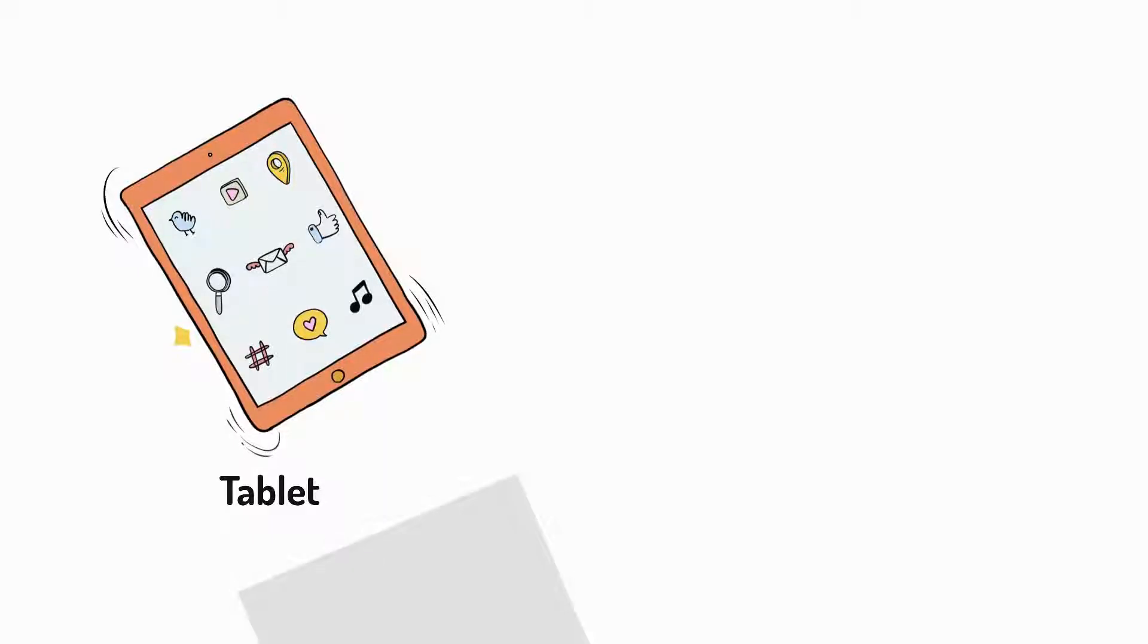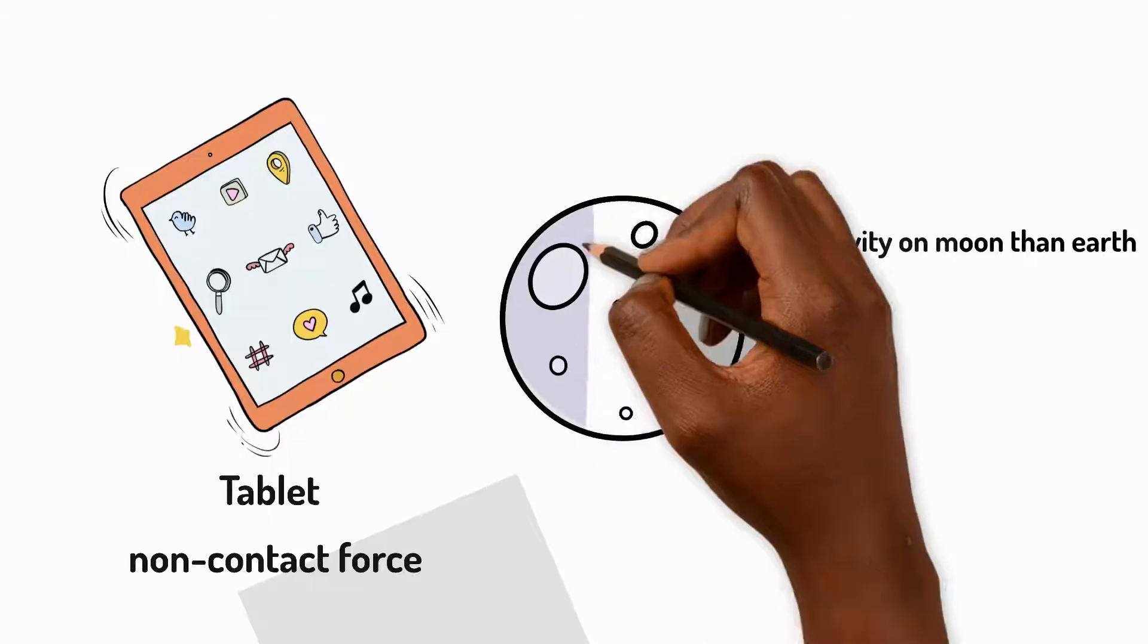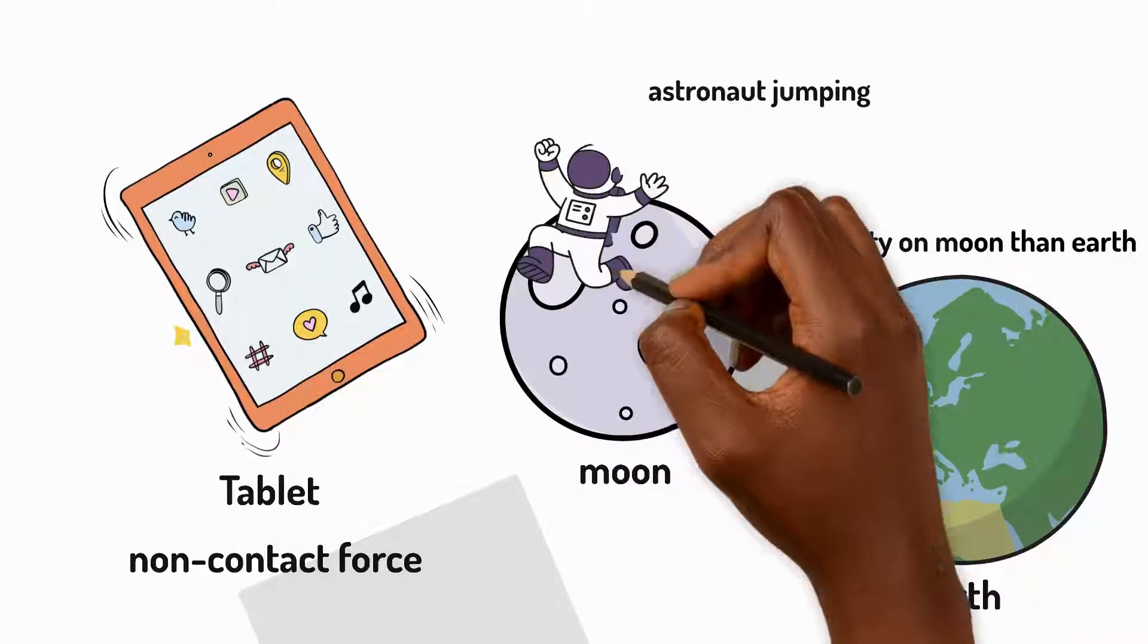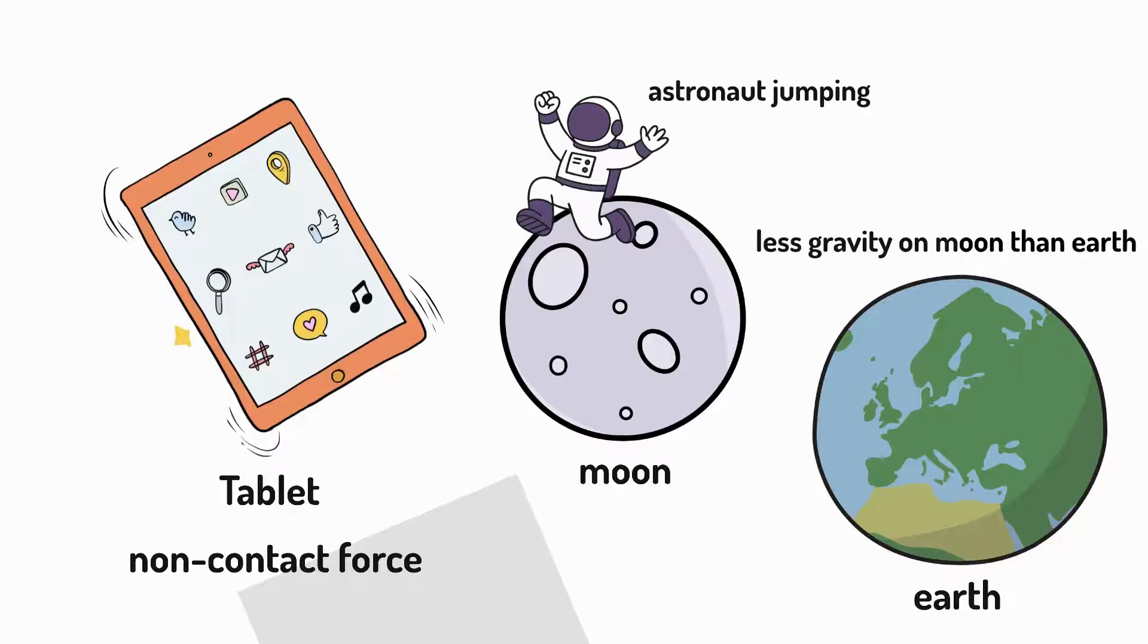That's because gravity is a non-contact force. It pulls objects down without needing to touch them. And did you know that there's less gravity on the moon than on earth? So when an astronaut jumps, it takes longer for gravity to pull them back down. A second type of non-contact force involves electricity.